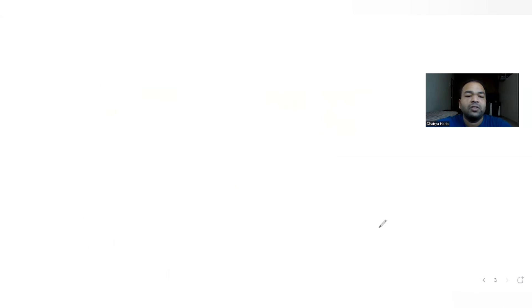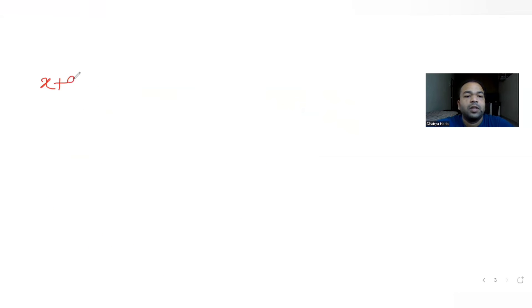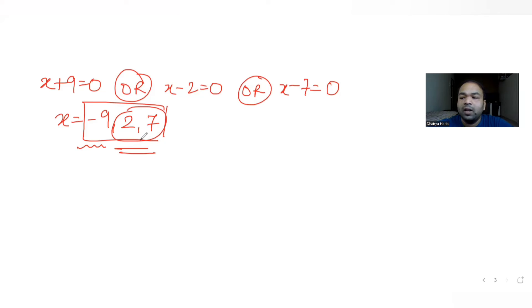Further, if I equate all of these brackets to 0, I get x plus 9 equals 0, or I get x minus 2 equals 0, or x minus 7 equals 0. So I get the values of x here, that is minus 9, 2, and 7. We were given in the question already that x equals minus 9 is the root of the equation, but we just needed to find out the other two roots that are 2 and 7. And here if you see the option that matches in the question is A.